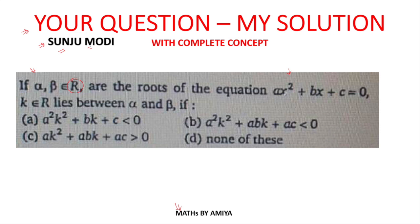are the roots of the equation ax square plus bx plus c. If there is a number k, which one is again a real number, lies between the roots, then among the options, which option is correct?